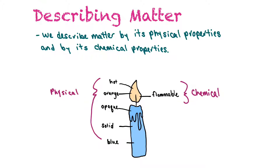We describe matter by its physical properties and by its chemical properties. Physical properties are what you can observe with your senses — for instance, whether something is hot, its temperature, its color. A candle flame is orange, the candle is opaque, it's a solid, and it's blue. Those are physical descriptions. A chemical property of a candle is that candle wax is flammable — it can be ignited and burn.